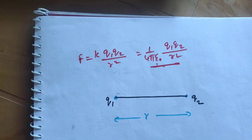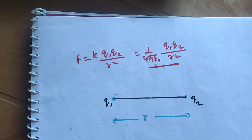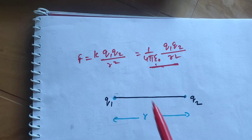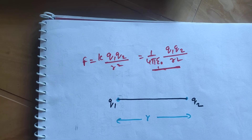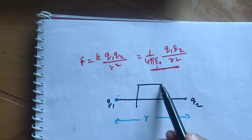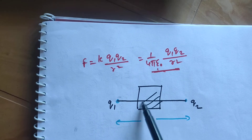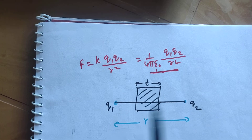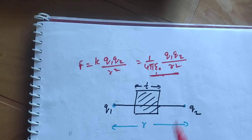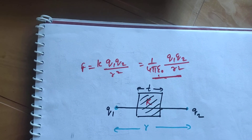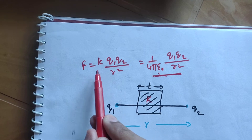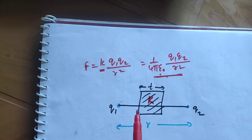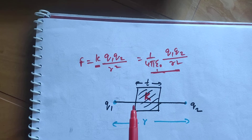Now, instead of vacuum, if you introduce some dielectric medium between these two charges, let us consider a dielectric medium of certain thickness T and dielectric constant capital K — also written as εr, the relative permittivity.